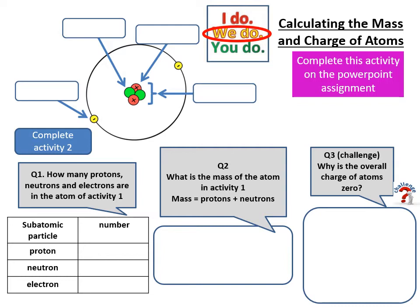On this diagram here, I can tell that the red ones are going to be protons, because protons are positive. This bit here is the nucleus. And the electrons are negative. And the neutrons are neutral.